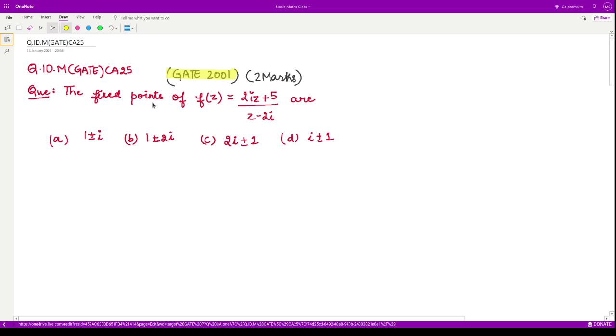For finding out the fixed points, you should first know what are the fixed points of any function. For the purpose of understanding, we say if you superimpose the w-plane with the z-plane, then those points which remain fixed are called fixed points.